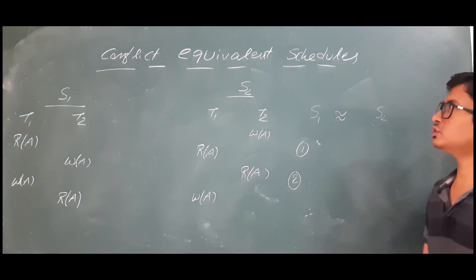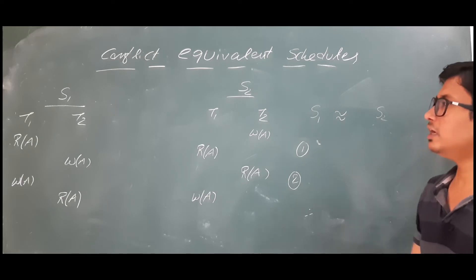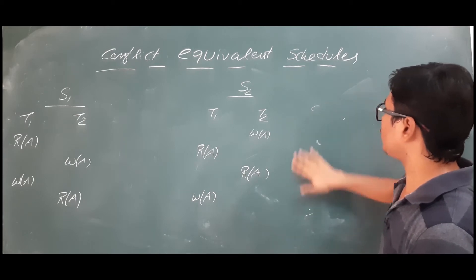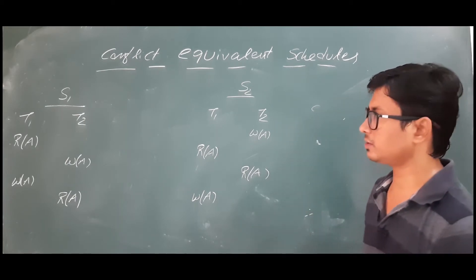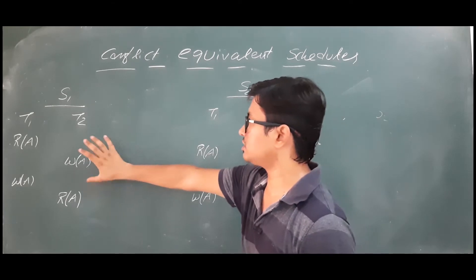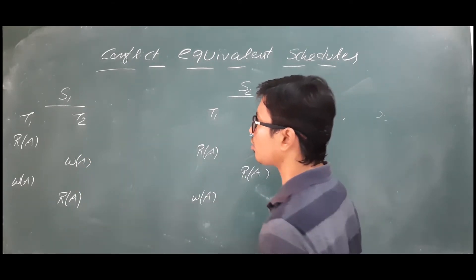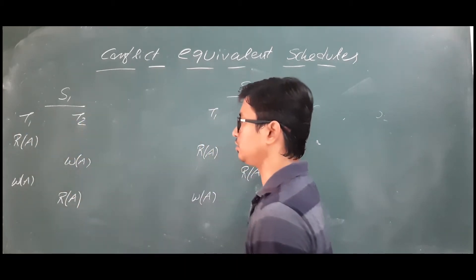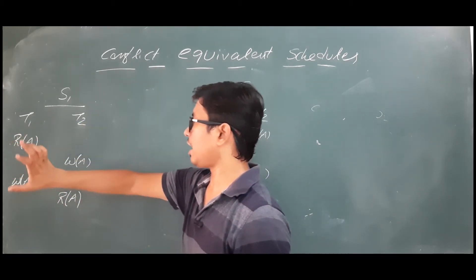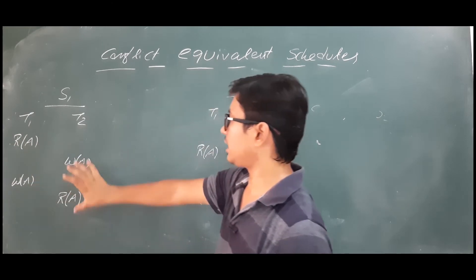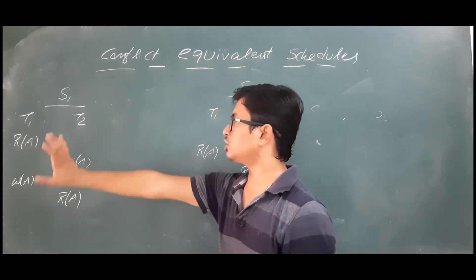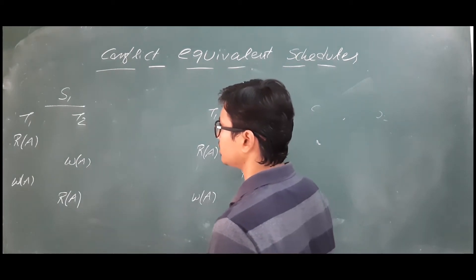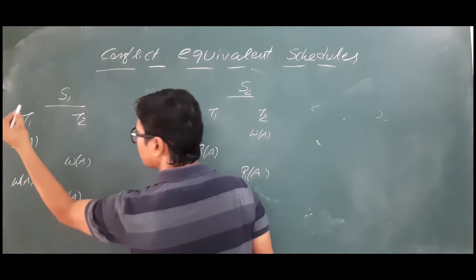I hope you have understood what is a conflict equivalent schedule. Let me discuss with an example whether these two schedules are conflict equivalent or not. First let me find what are the conflict operations in schedule S1. There is transaction T1 and transaction T2. Transaction T1 has two operations and transaction T2 has two operations, and the schedule is a non-serial schedule.